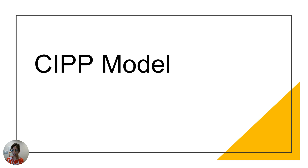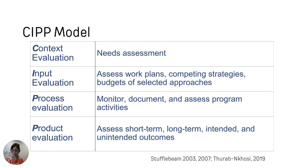Next, let's talk about the CIPP model. CIPP is an acronym. C is context evaluation — what needs to be done. This is where you document training needs, program goals, and the learning environment for implementing the program. The I, input evaluation, is where you document how it should be done — assessing work plans, competing strategies, and developing budgets for selected approaches.